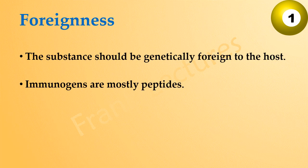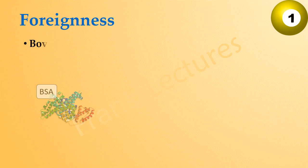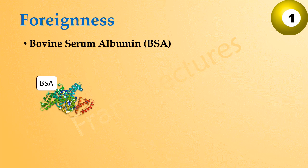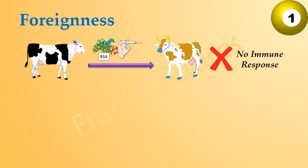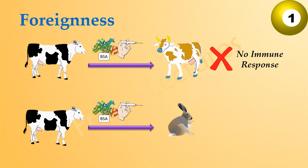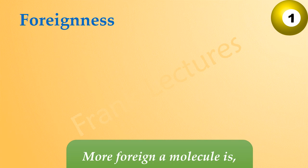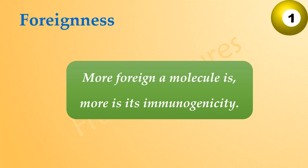For example, bovine serum albumin, abbreviated as BSA, is a protein found in all cows. If BSA is injected from one cow into another, there will be no immune response because the protein is identical, and for the immune system of every cow, BSA is a self molecule. But if BSA is injected into a rabbit, an immune response is induced, because BSA is foreign to the rabbit's immune system. So for a molecule to be immunogenic, it must be recognized as foreign — the more foreign a molecule is, the greater its immunogenicity.